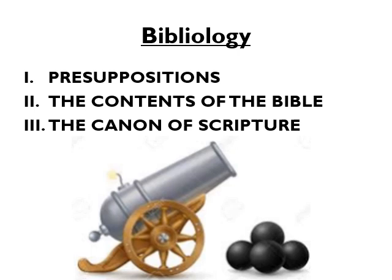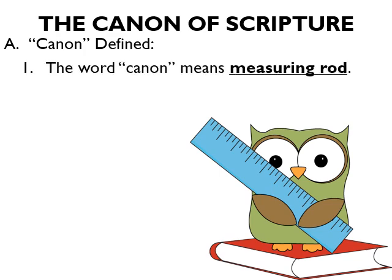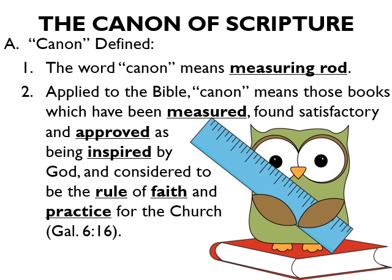Let's now look at Roman numeral 3: the canon of Scripture. The word canon means measuring rod. Applied to the Bible, canon means those books which have been measured, found satisfactory, and approved as being inspired by God, and considered to be the rule of faith and practice for the church. The word rule, as found in Galatians 6:16, is the Greek word canon, which means the Bible is supposed to be the ruler to which we measure ourselves, not people or preferences.